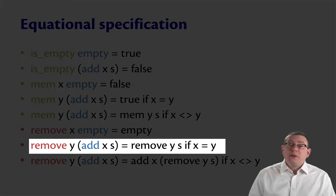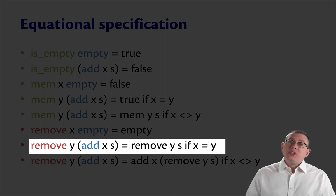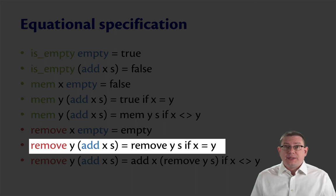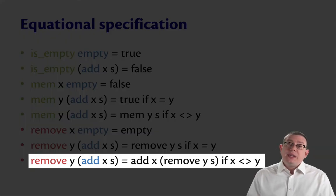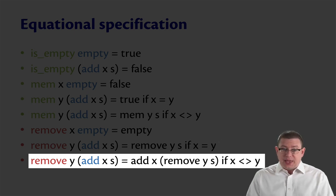So if they are equal, we can get rid of the add x, but we still have to recurse because maybe y also occurs later in s, like it's been added somewhere before too. So we have to keep removing it from the set. On the other hand, if x and y are not the same, then we need to keep the add x around because that's still going to need to be an element of the set even after we remove y. But we have to recurse down.